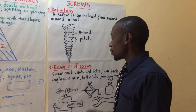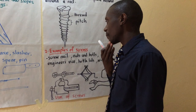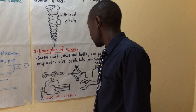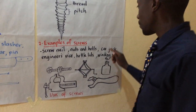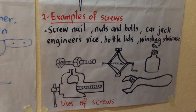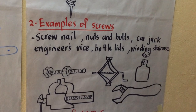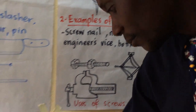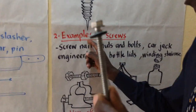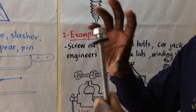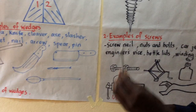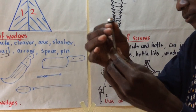Examples of devices that use a screw mechanism: we have a screw nail, nuts and bolts, a car jack, an engineer's vise, bottle tops, and a winding staircase. This is a screw nail — screw nails are those nails that hold the top of your desk to the stand.